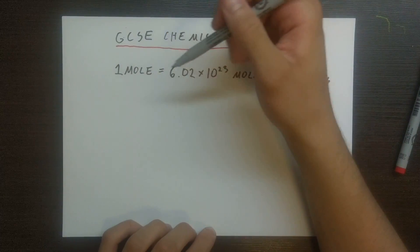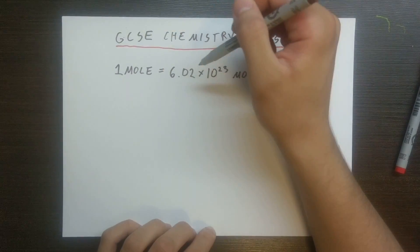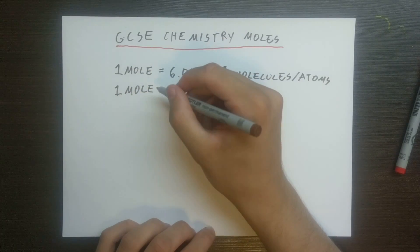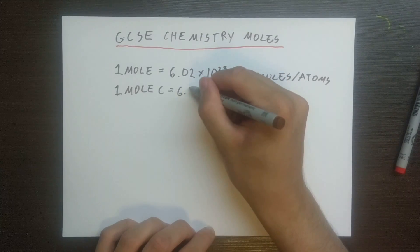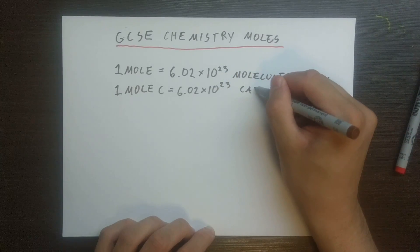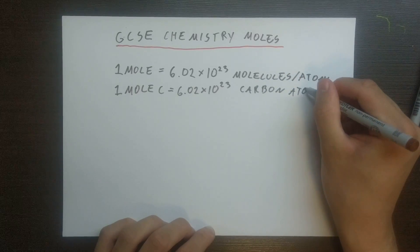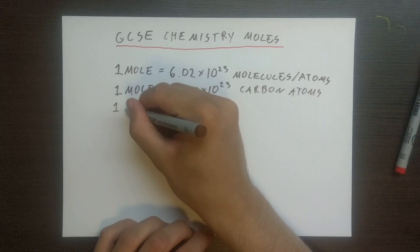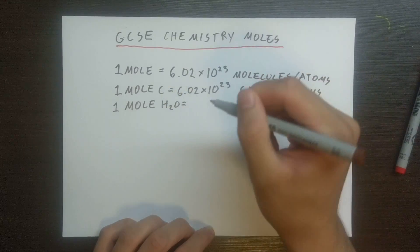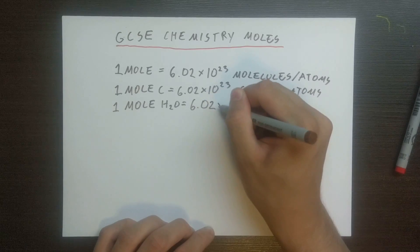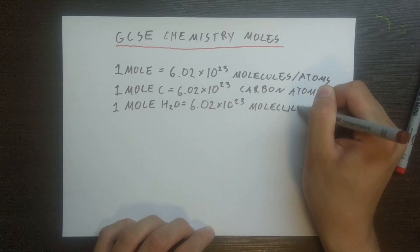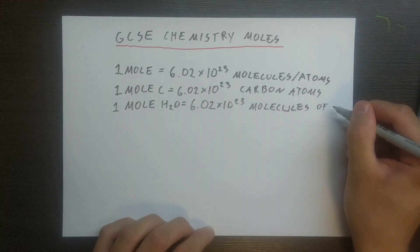So one mole is always that number. For example, one mole of carbon will be 6.02 times 10 to the power of 23 carbon atoms. Likewise, one mole of water H2O is equal to 6.02 times 10 to 23 molecules of H2O.